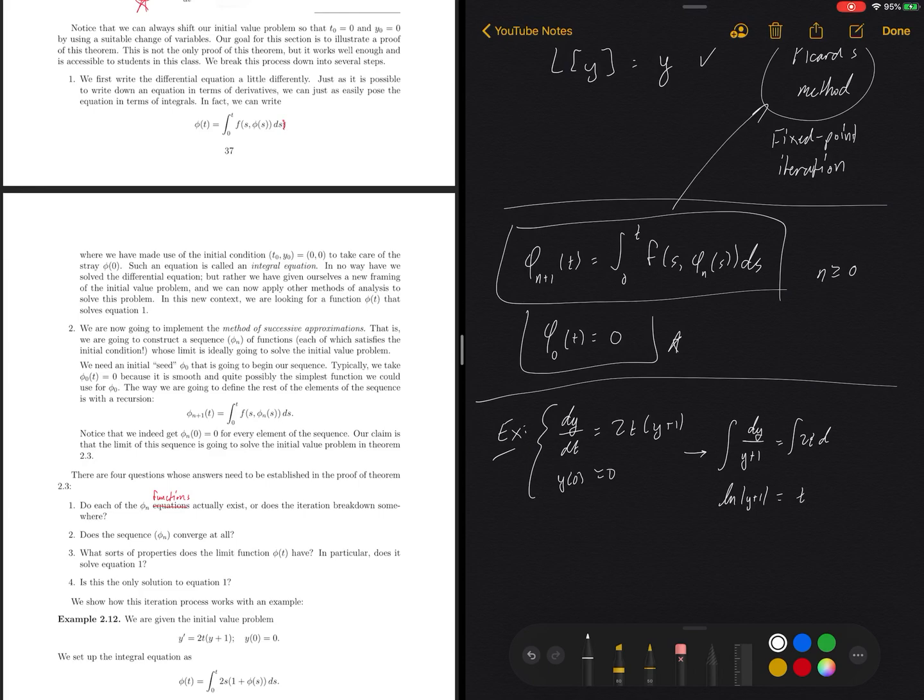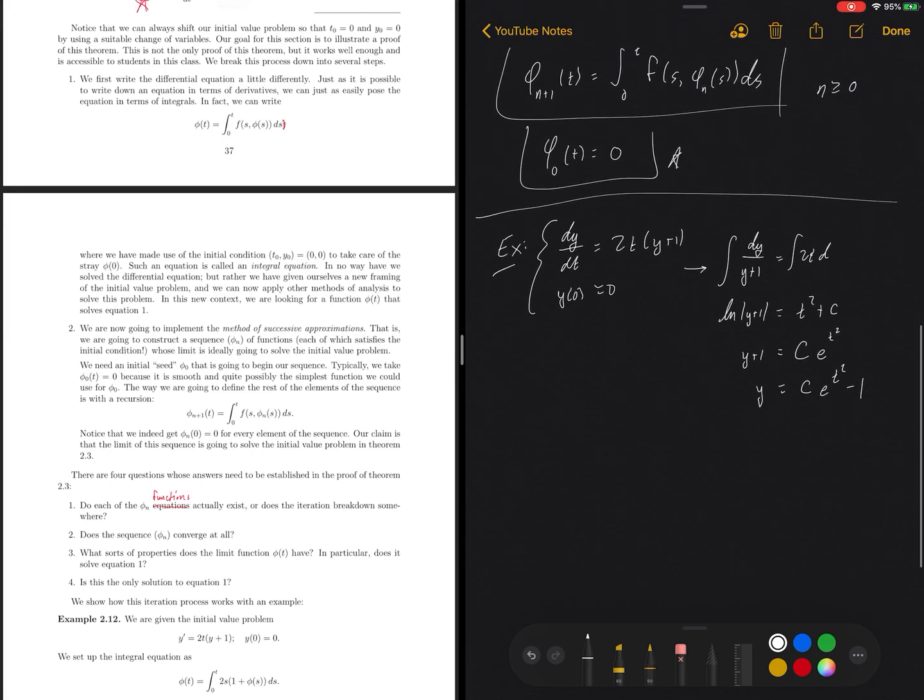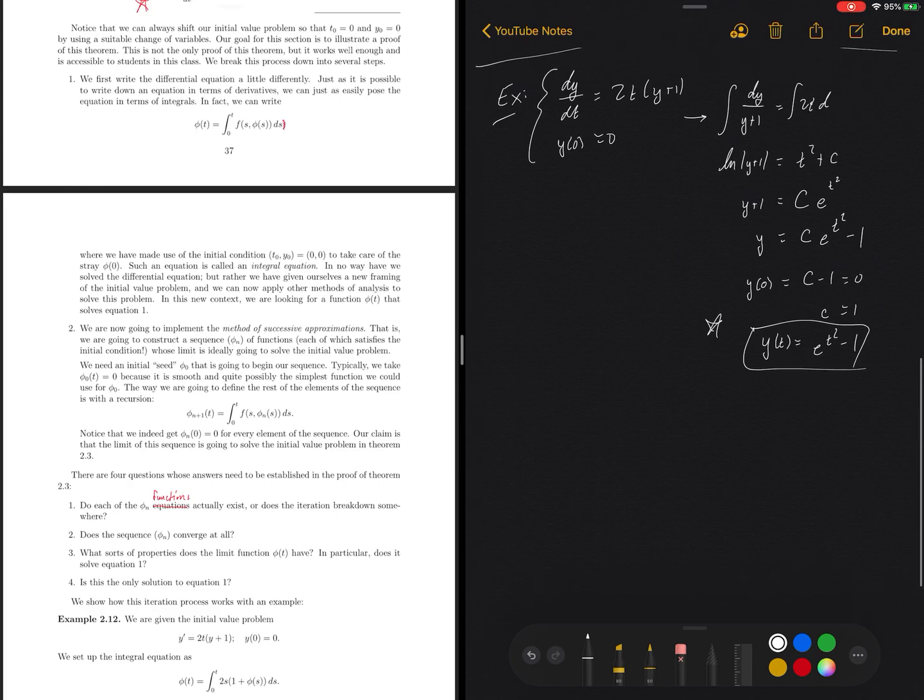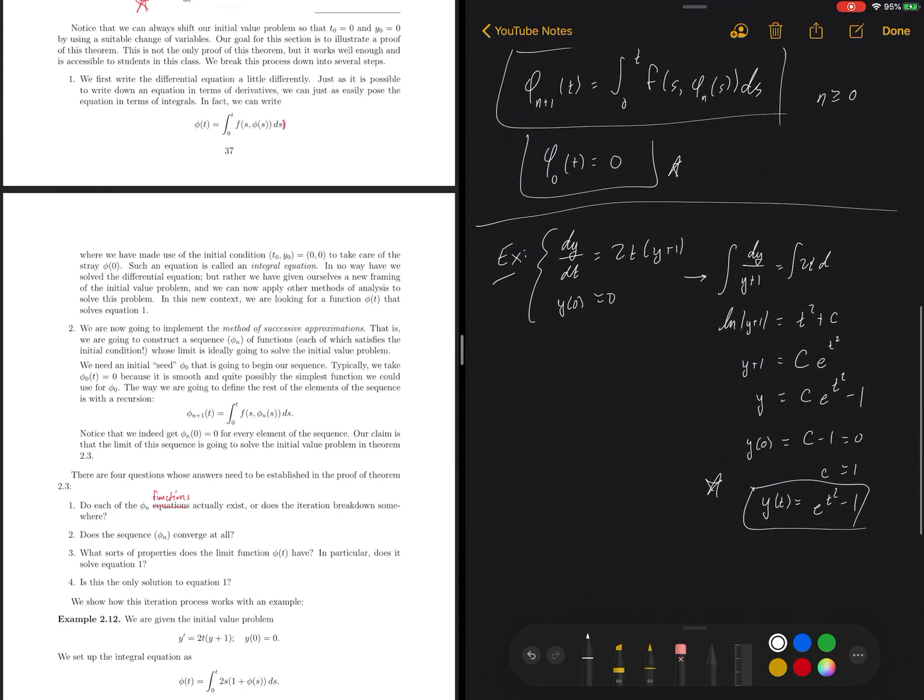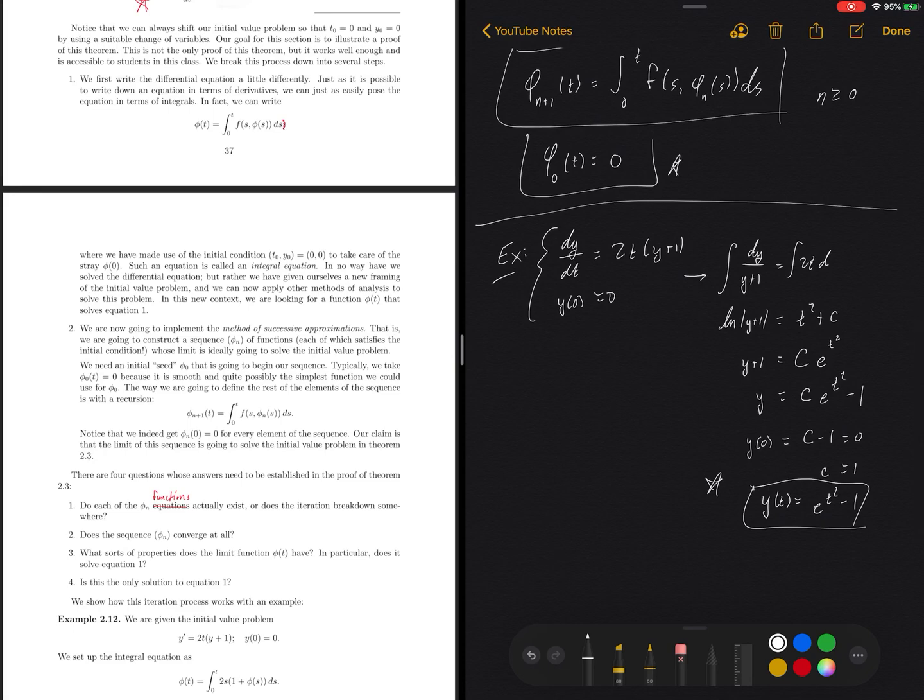This will be for y of zero equals zero as per theorem statement and for Picard's iteration to work. So we know the solution to this equation. We can compute it very quickly. This is a separable differential equation. If we integrate both sides, this winds up giving us y plus 1 and then a t squared plus a c. If I exponentiate both sides and then absorb a plus or minus sign into a constant, I wind up with e to the t squared, and then I subtract the 1 off of both sides. So c e to the t squared minus 1. If I go ahead and use my initial condition, y of zero then is going to give me c minus 1 equals 0, so c equals 1. So this is y of t equals e to the t squared minus 1.